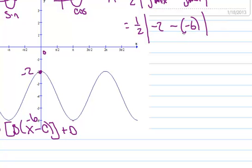When you calculate that out, inside I'm going to end up with negative 4, absolute value is 4, half of that is 2. So our A is 2.